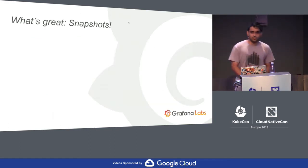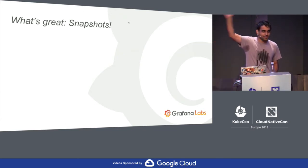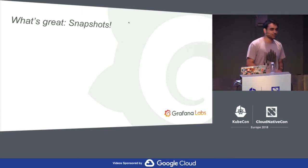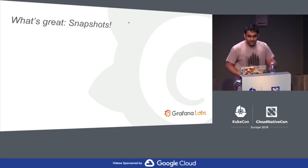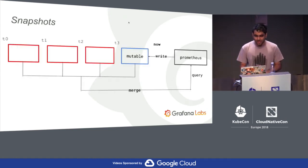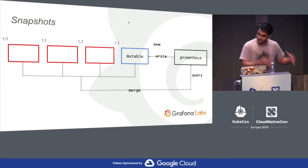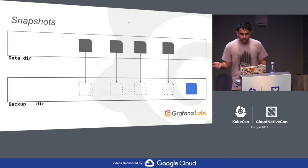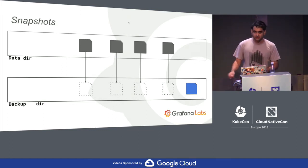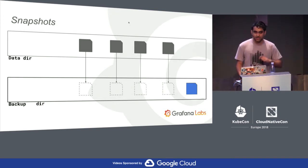How many of you ran 1.0 in production and wanted backups? And how many were frustrated by the answer: 'stop Prometheus, backup the disk, and restart Prometheus'? That was the problem in 1.0. With the structure of TSDB, we can support ultra-fast online backups — snapshots. We have a lot of immutable blocks. We take the data directory, do a hard link syscall on all the immutable blocks, and write the in-memory data to disk. The syscalls take milliseconds, and writing the in-memory data takes maybe 10 seconds on a very loaded server.